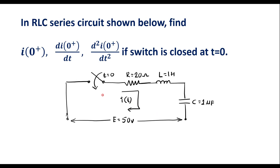This is the given circuit. Here we can see that R, L, and C are connected in series across a 50 volt voltage source and there is a switch. Before t equal to 0, the switch was in the open state. So in the open state, current in the circuit is 0, that is i(0-) will be 0. Similarly, the voltage across the capacitor when the switch is open, Vc(0-) will be equal to 0.